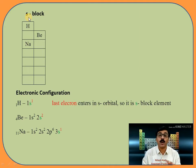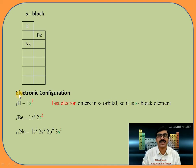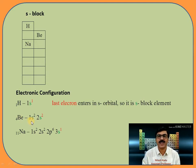First we can see what is called an S block element. I will take three elements: hydrogen, beryllium, and sodium. The atomic number of hydrogen is 1 and its electronic configuration is 1s1. The electronic configuration of beryllium is 1s2 2s2. And the electronic configuration of sodium is 1s2 2s2 2p6 3s1.